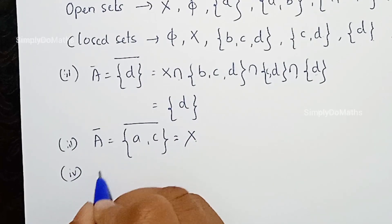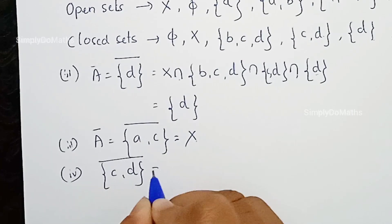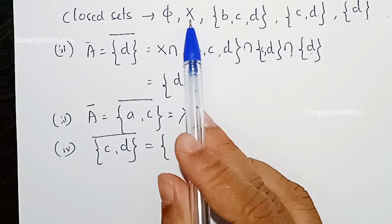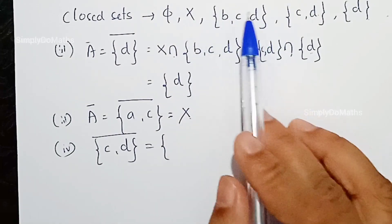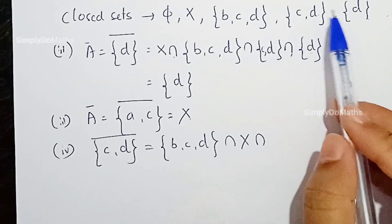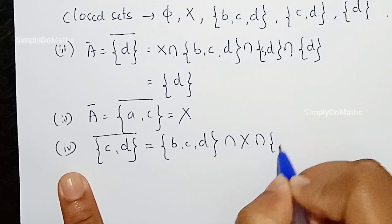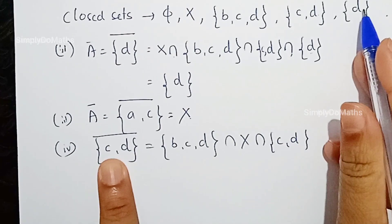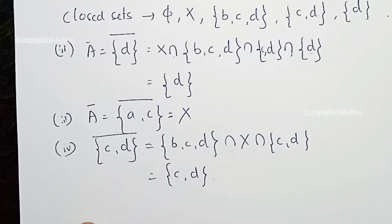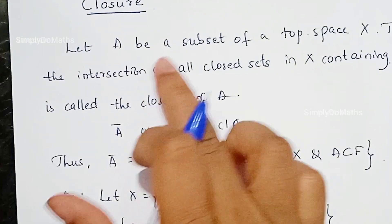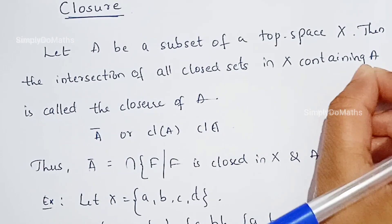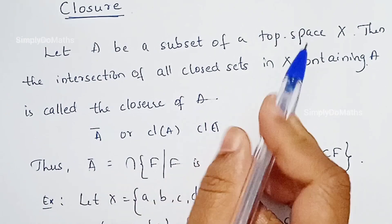Let's consider one more example — the closure of {C, D}. We need closed sets containing both C and D. X contains C and D. {B, C, D} contains C and D. {C, D} contains C and D. {D} does not contain C, so it won't be included. The intersection of X, {B, C, D}, and {C, D} is {C, D} itself. So the closure of {C, D} is {C, D}. The intersection of all closed sets in X containing a given subset is called the closure of that subset. I hope you understand; I will come with one more topic in my next video.